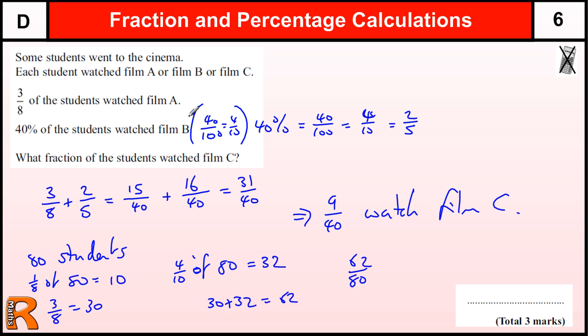So that's how many students watched film A and film B, so that implies that we've got 18 out of 80 watching film C. And if we cancel that down by dividing by 2, we get 9 out of 40.